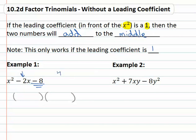You might notice eight is four times two and if the four was negative, negative four and a positive two, that would multiply to negative eight and add to negative two.